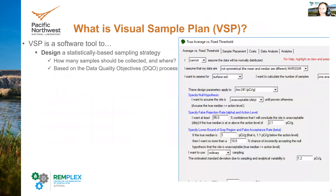Visual Sample Plan is fundamentally a software tool with a few key objectives. The first is to design a statistically-based sampling strategy — to know how many samples should be collected and where. This is based on the data quality objectives process, ensuring that before sampling takes place, it's done in a way, and with sufficient sampling, to have high confidence in the specific decision of interest. It's all very decision-driven: what is the objective of your sampling, why are you doing the sampling, and specifically, what kind of quantitative statement do you want to make once you have results.